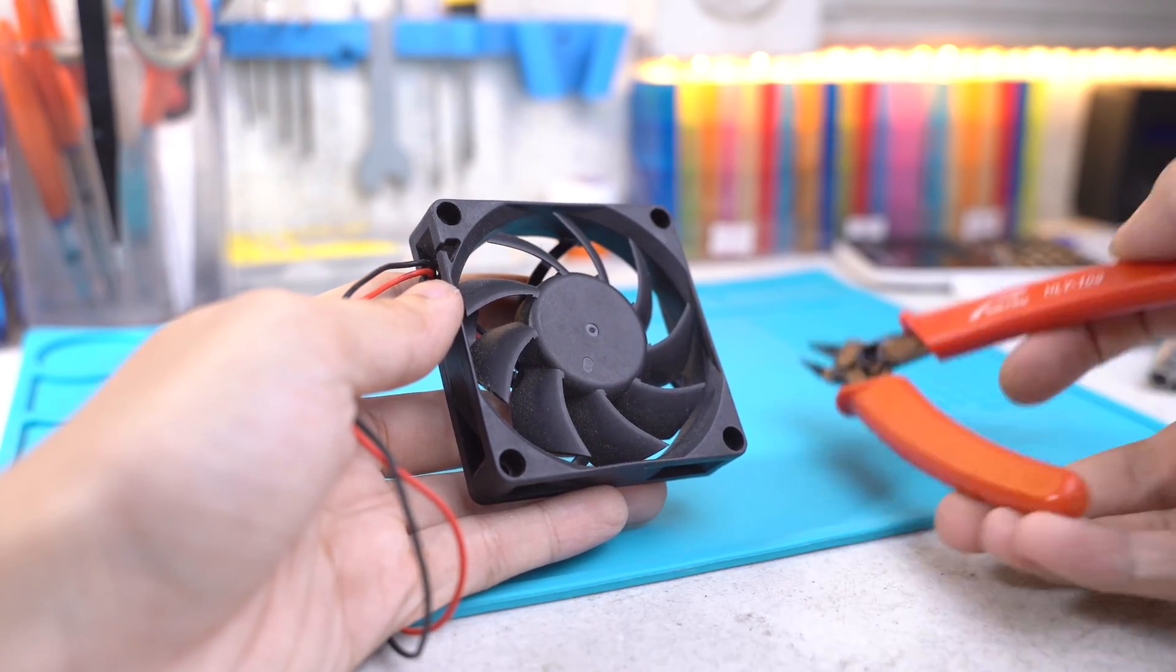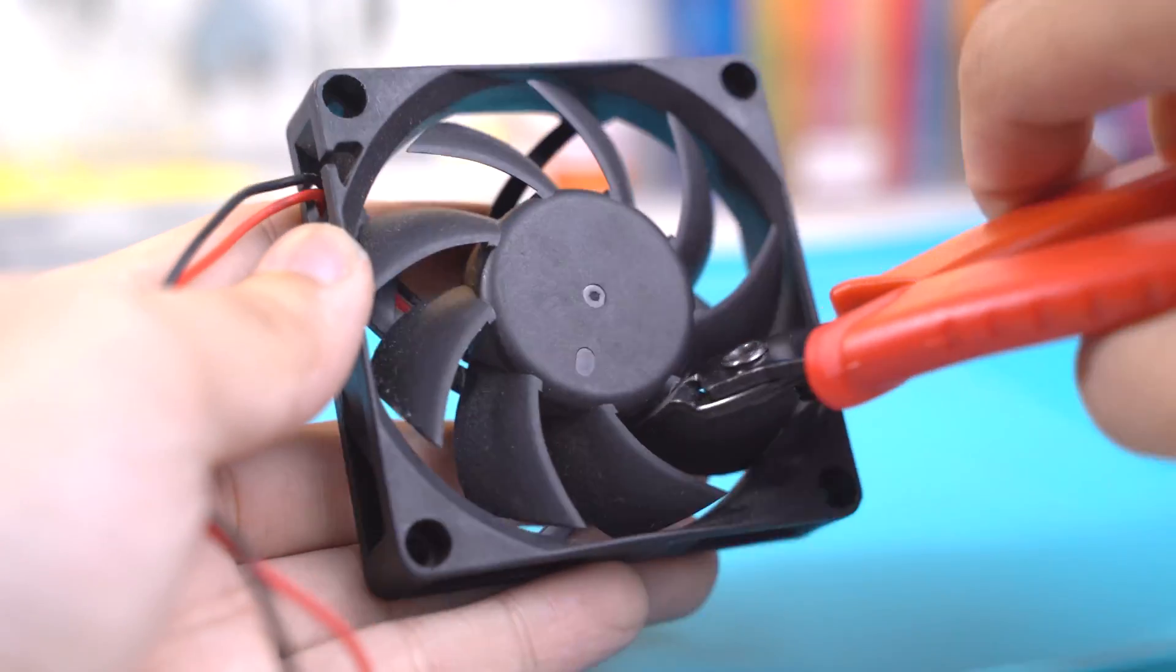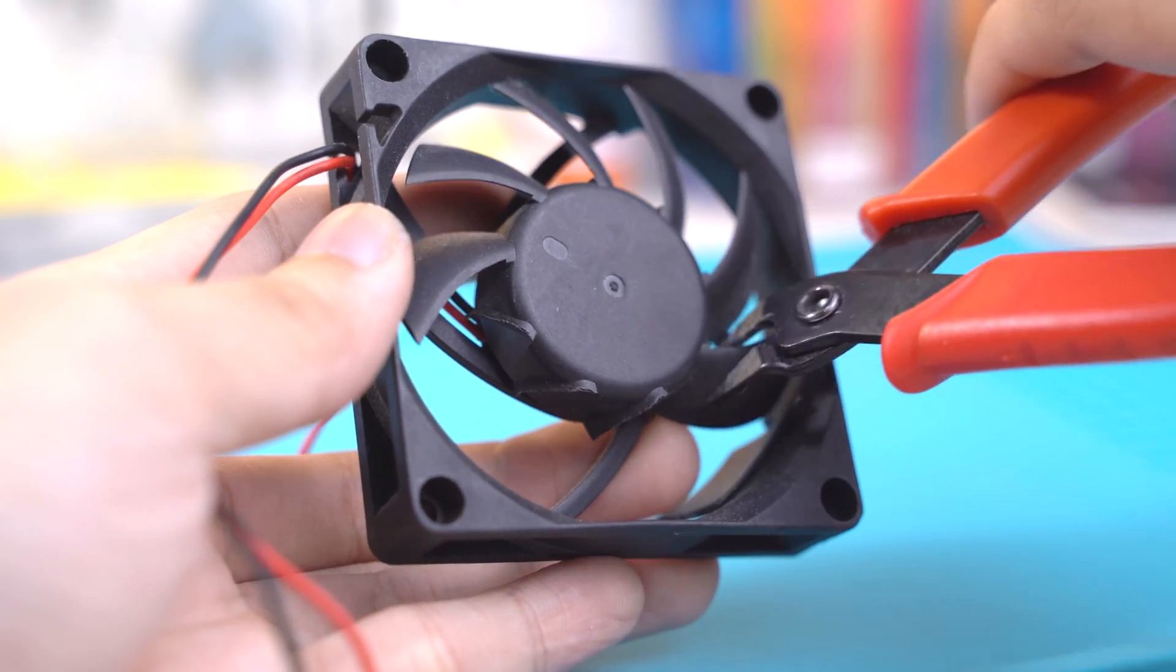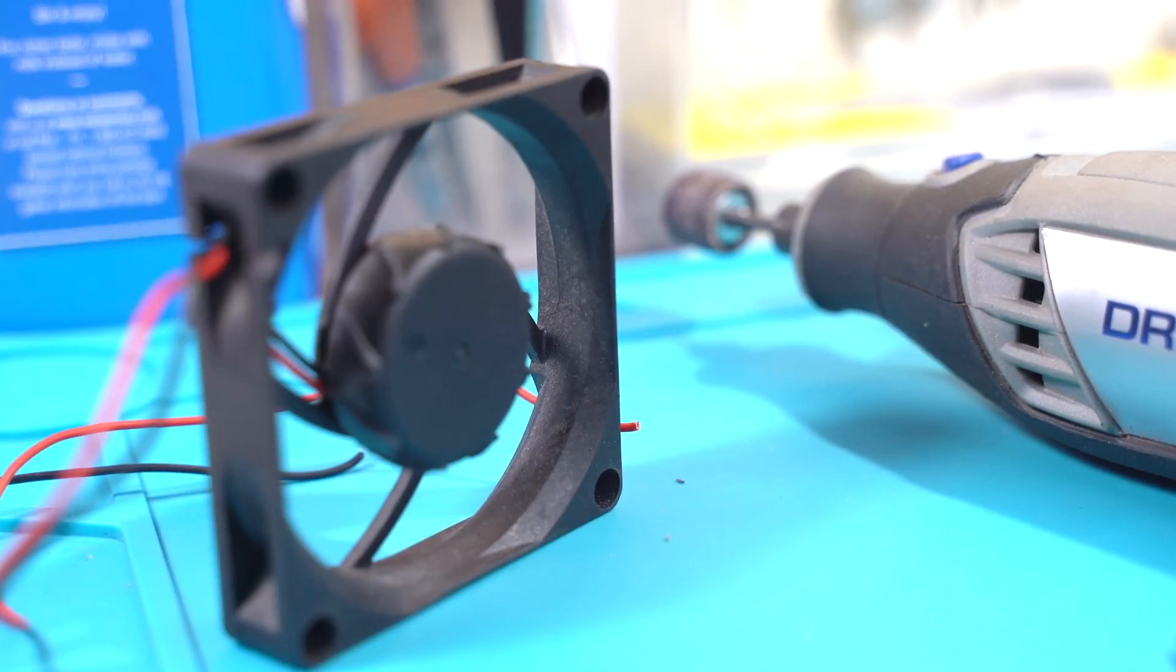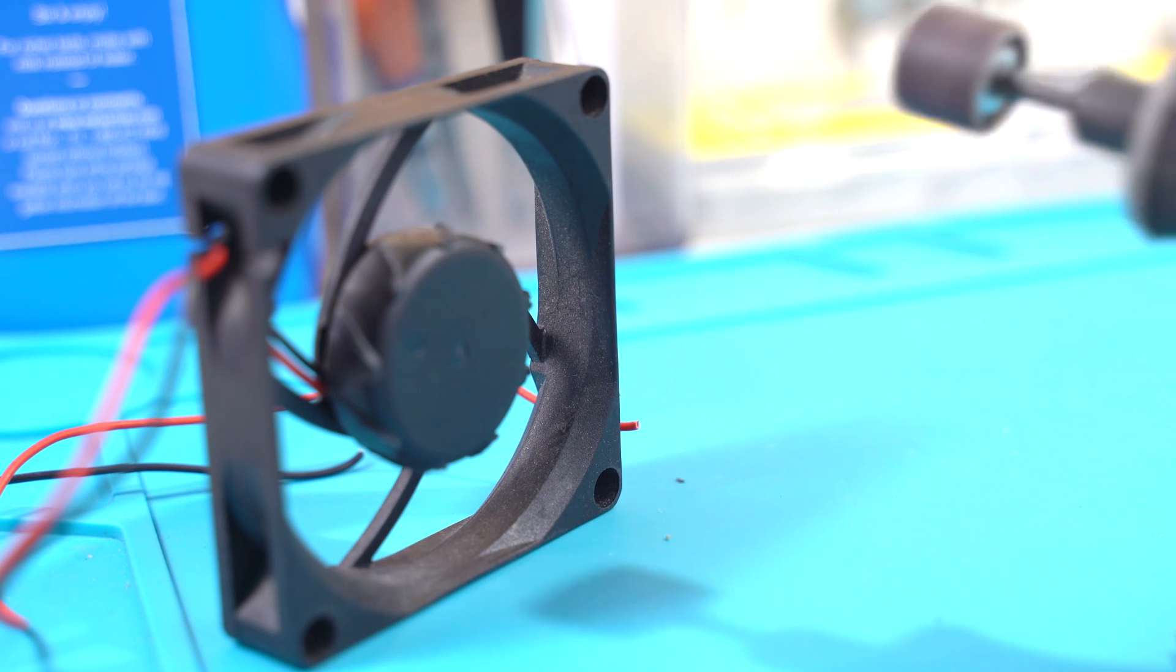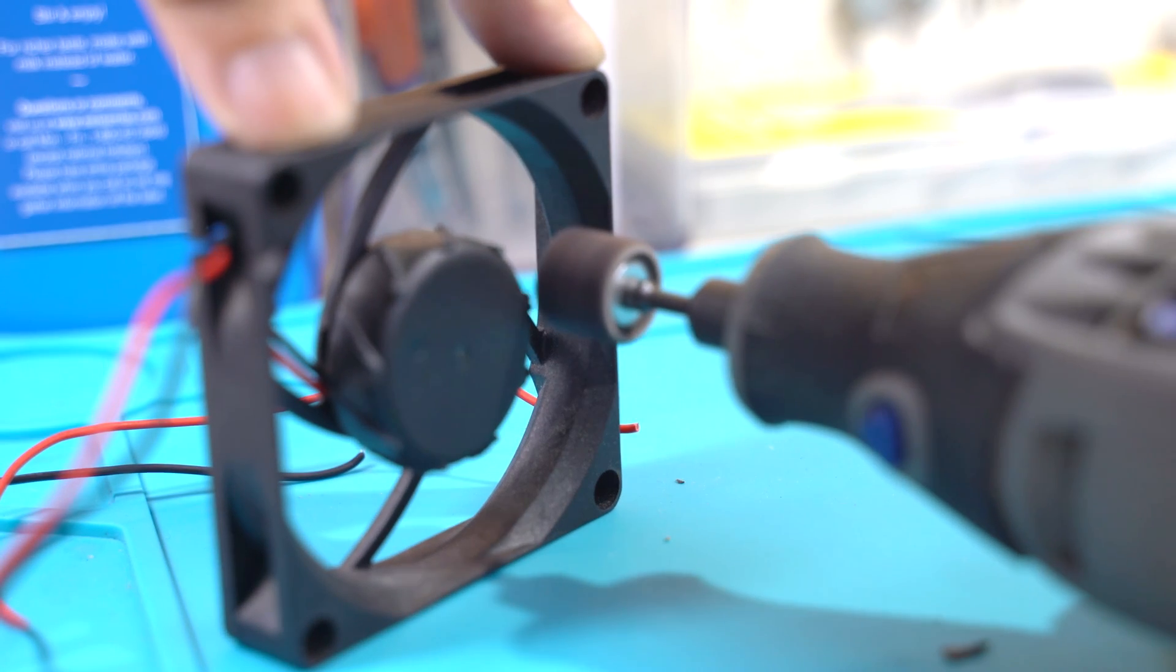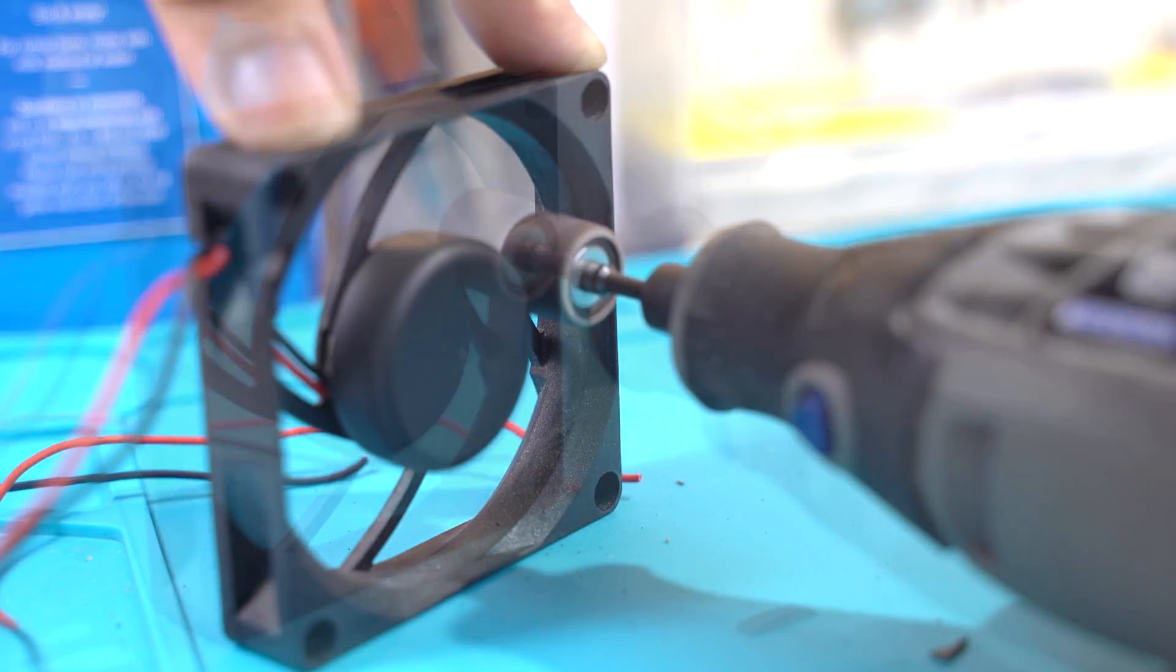The first step in this project is to remove the blades of the fan. In my case, I used a wire cutter to snip off the blades. The goal here is to eliminate wind resistance while keeping the fan's motor perfectly balanced. By using your Dremel tool, you can easily sand off the protruding edges.